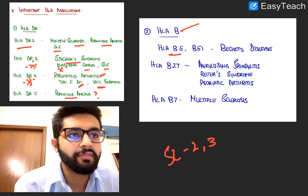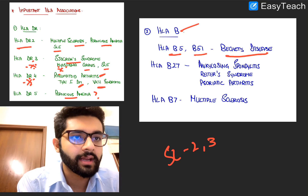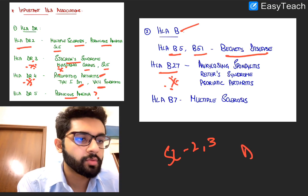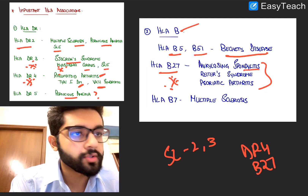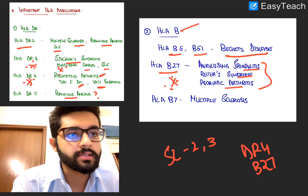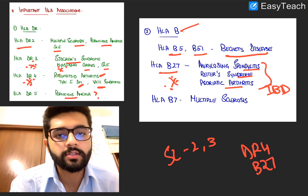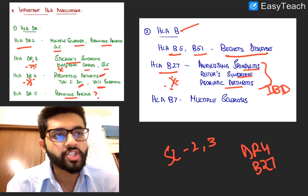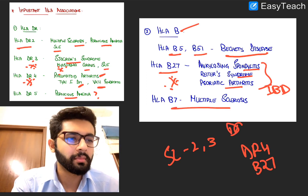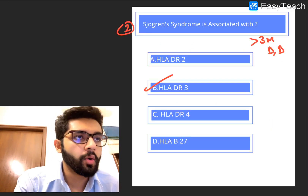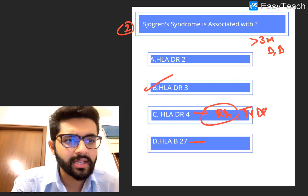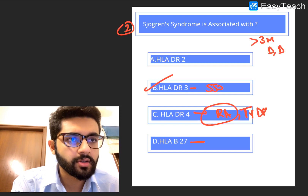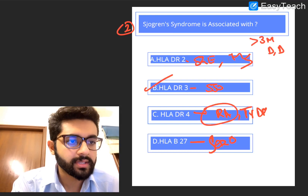HLA-DR5 is associated with pernicious anemia. For HLA-Bs: HLA-B5 and B51 are seen in Behçet's disease — oral and genital ulcers. HLA-B27 is very important — the second most important after DR4 — seen in all seronegative arthritides: ankylosing spondylitis, reactive arthritis or Reiter's syndrome, and psoriatic arthritis. Also associated with IBD — ulcerative colitis and Crohn's. HLA-B7 is associated with multiple sclerosis — DR2 and B7 both for MS.